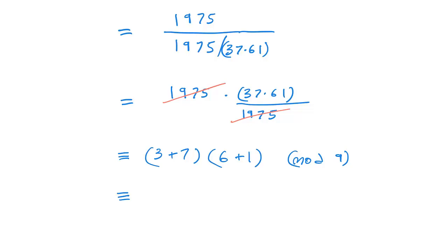The 3 plus 7 becomes 10. And 10, when we divide by 9, has a remainder of 1. The 6 plus 1 becomes 7. So 1 times 7 in total, our answer is 7 to this problem.